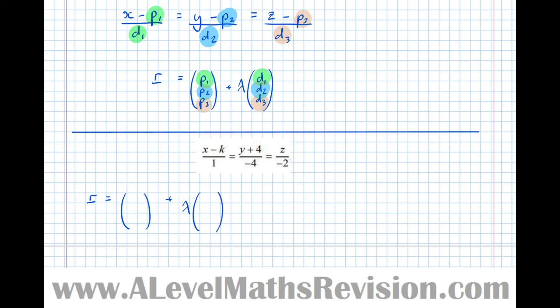Well here we can see that x minus k. So here the top line must be x minus k, so our x component of the start point must be k.